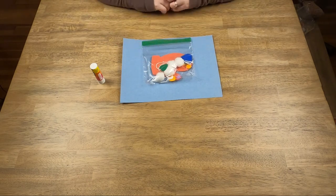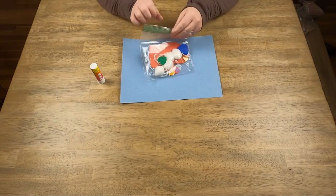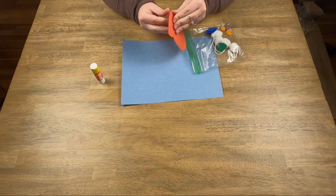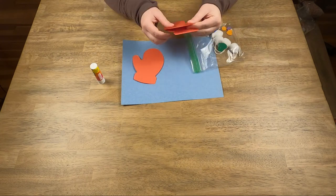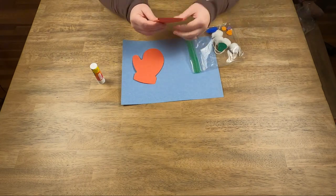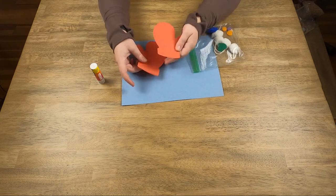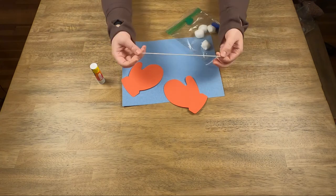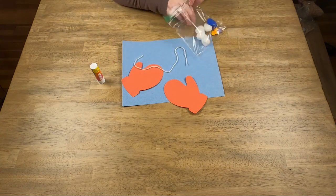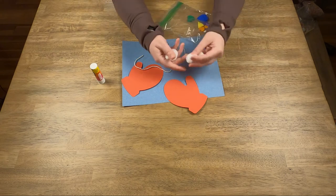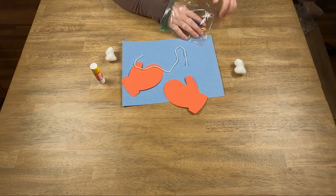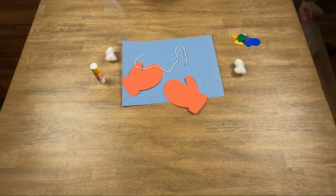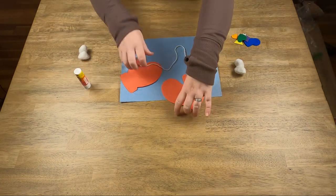Once you have your supplies, we're gonna start by taking out our mittens. You should have two mittens, you might even have three. They'll be stuck together so you have to separate them, but we only need two. One, two. You'll need a piece of string, some cotton balls, and some foam stickers.